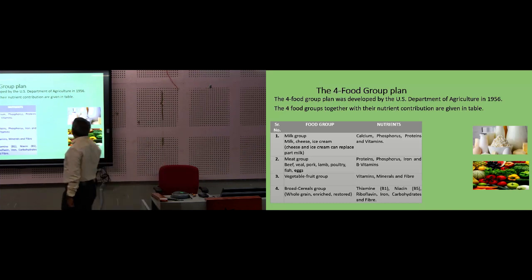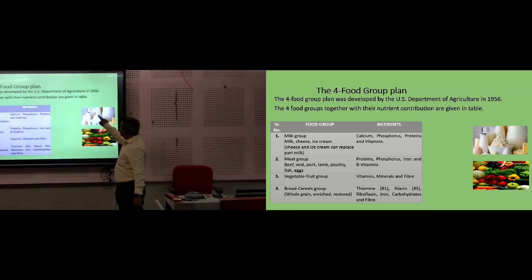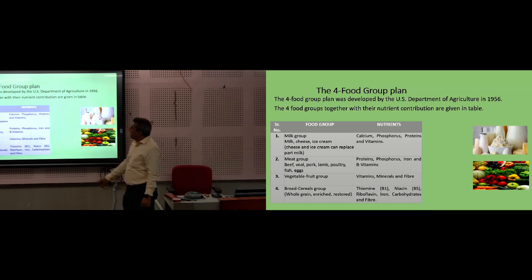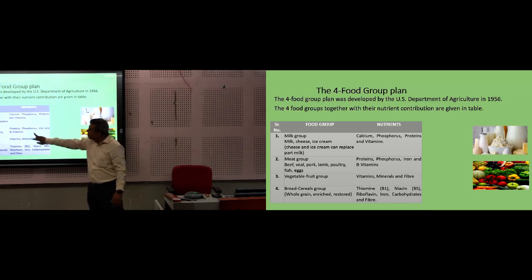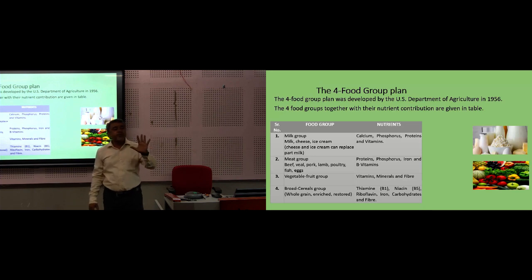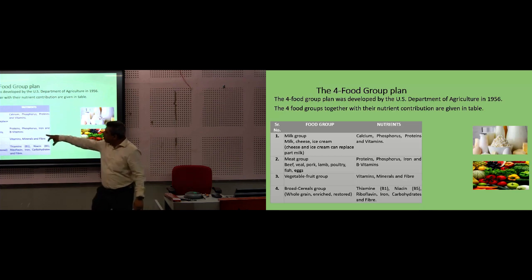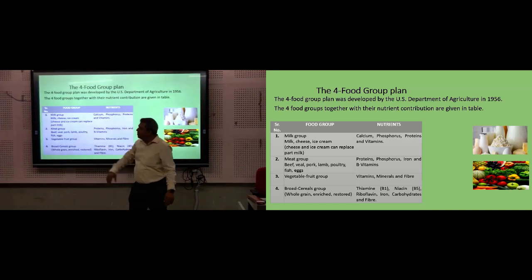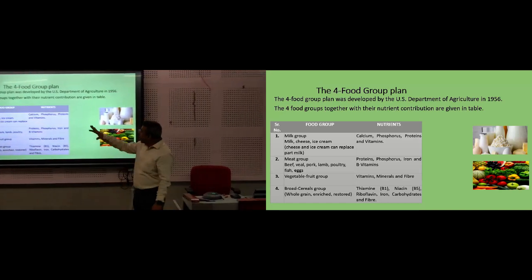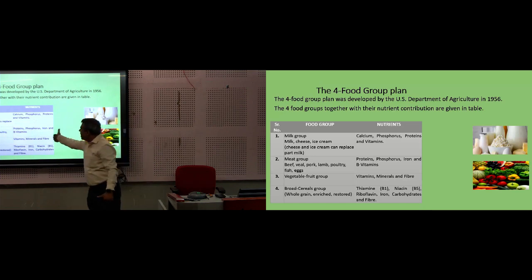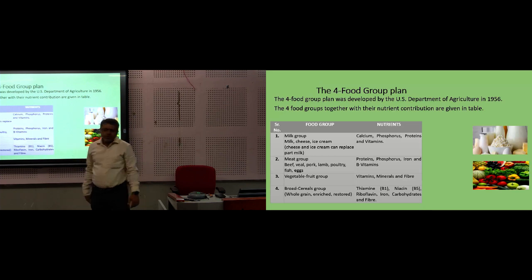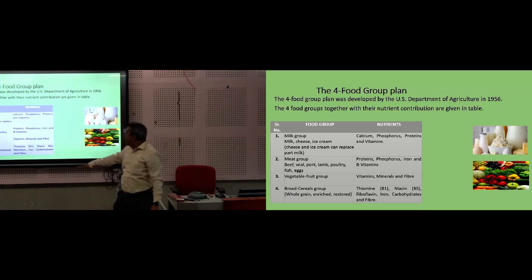Within the nutrient contribution, taking milk as an example — this group contains milk, cheese, and ice cream. These composed of calcium and phosphorus, which are essential for bone formation, plus proteins and vitamins. That is the milk group. The meat group includes different types of meats: beef, veal, pork, lamb, poultry, and fish. The meat group majorly provides protein, phosphorus, iron, and B-group vitamins.